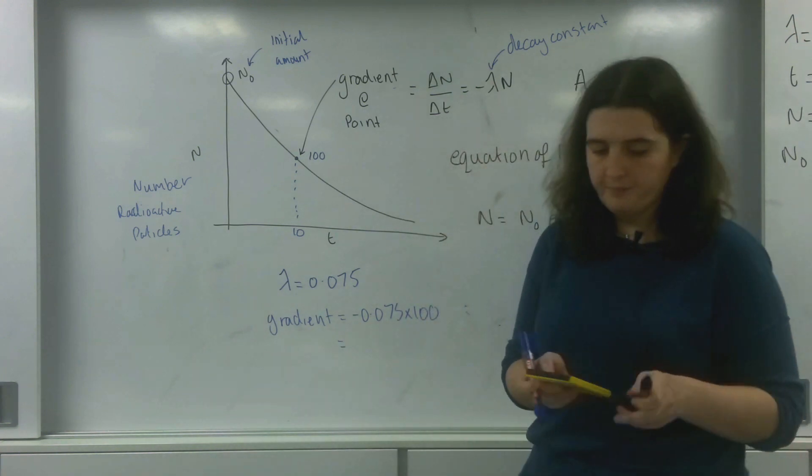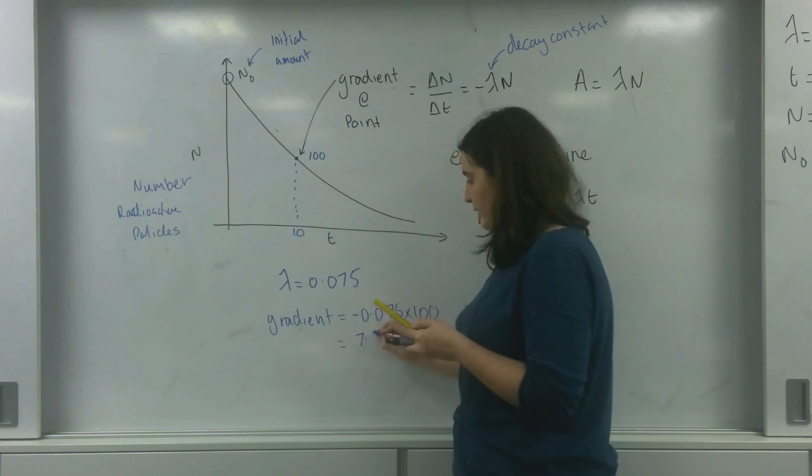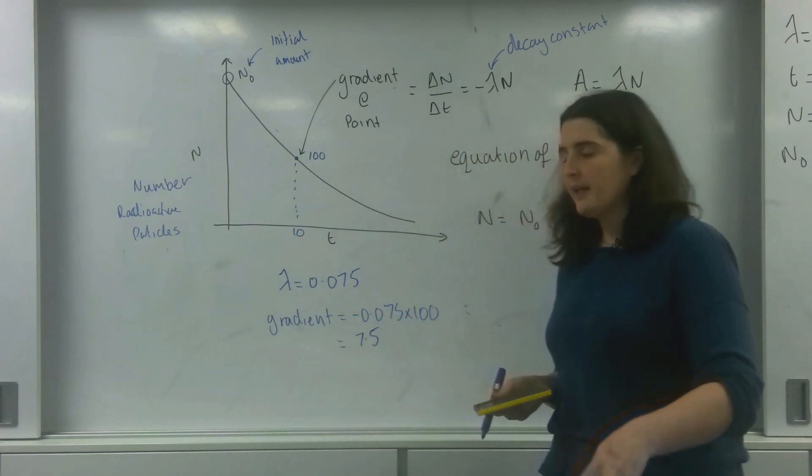Which equals 0.075 times by 100, and that would be 7.5.